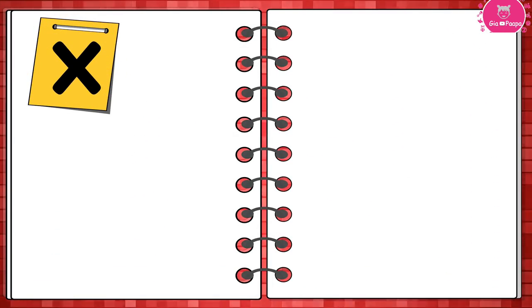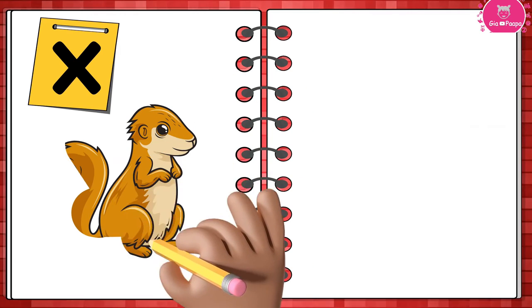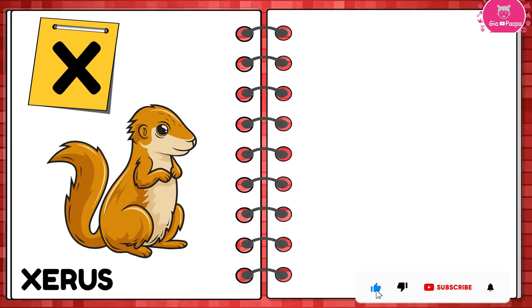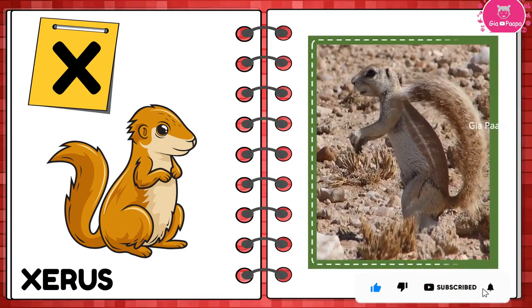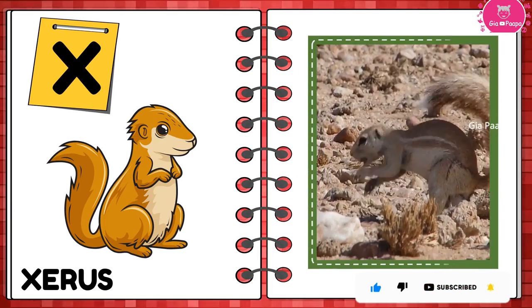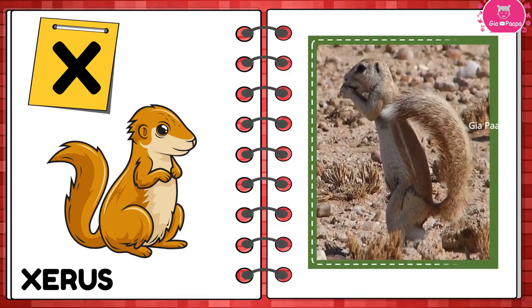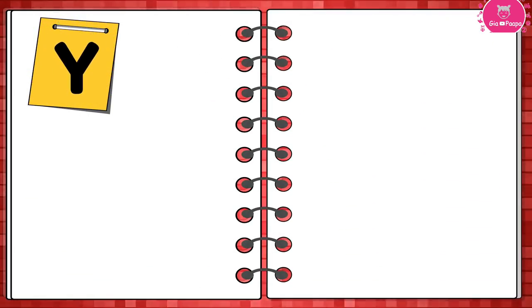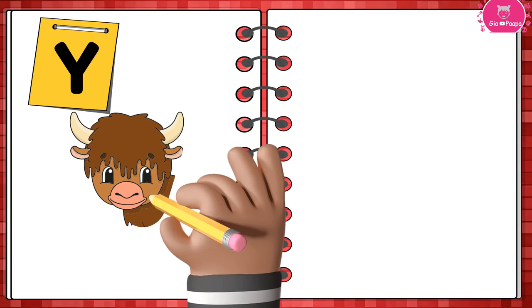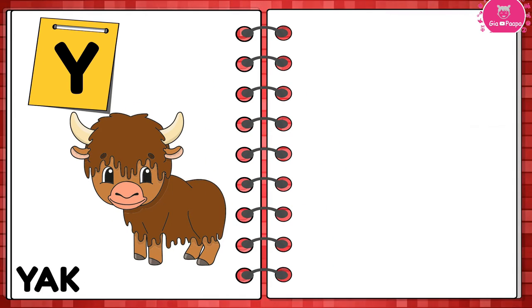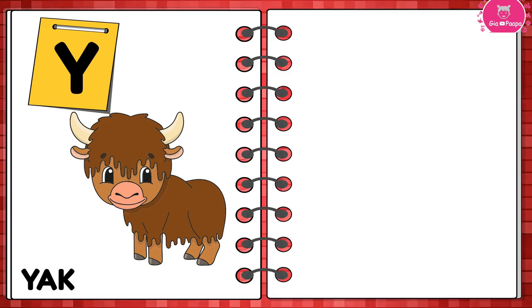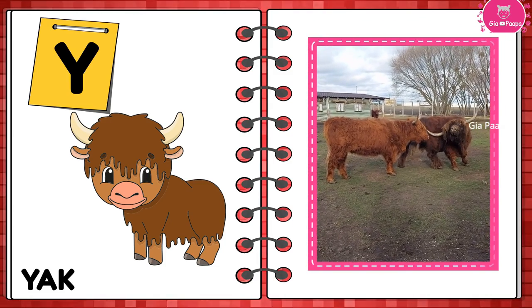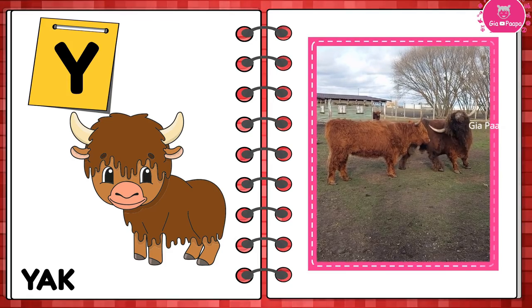X is for Ox. Ox. X is for Ox. Ox. Y is for Yak. Yak. Y is for Yak. Yak.